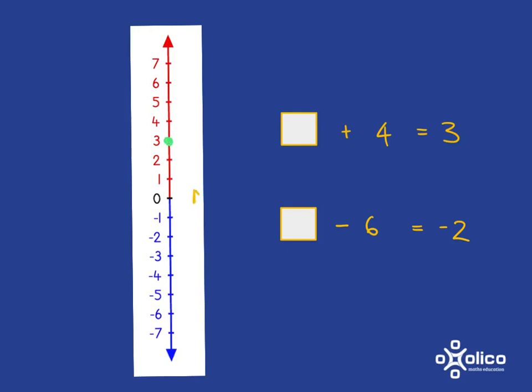We were going up from somewhere, and we were going up 4 steps. So, from somewhere, we went up 4 steps and ended up at 3. Well, if we want to know where that somewhere is, all we can do is go back down 4 steps, and we'll see where we started.